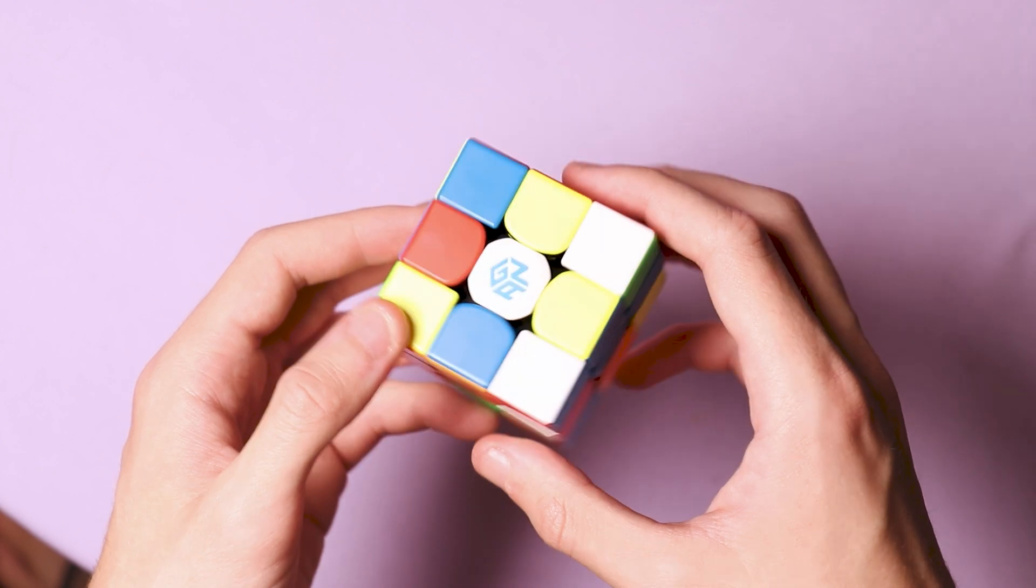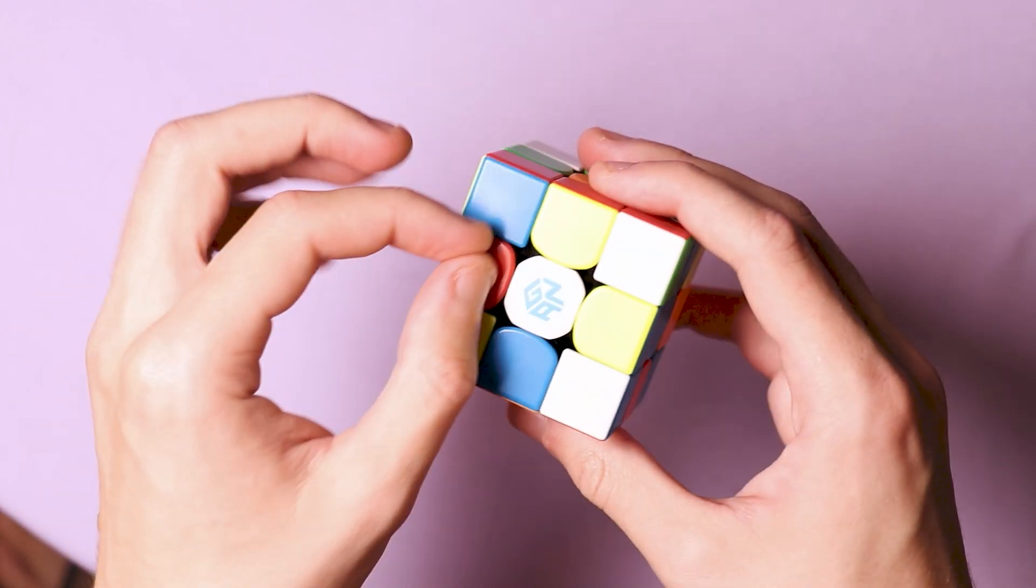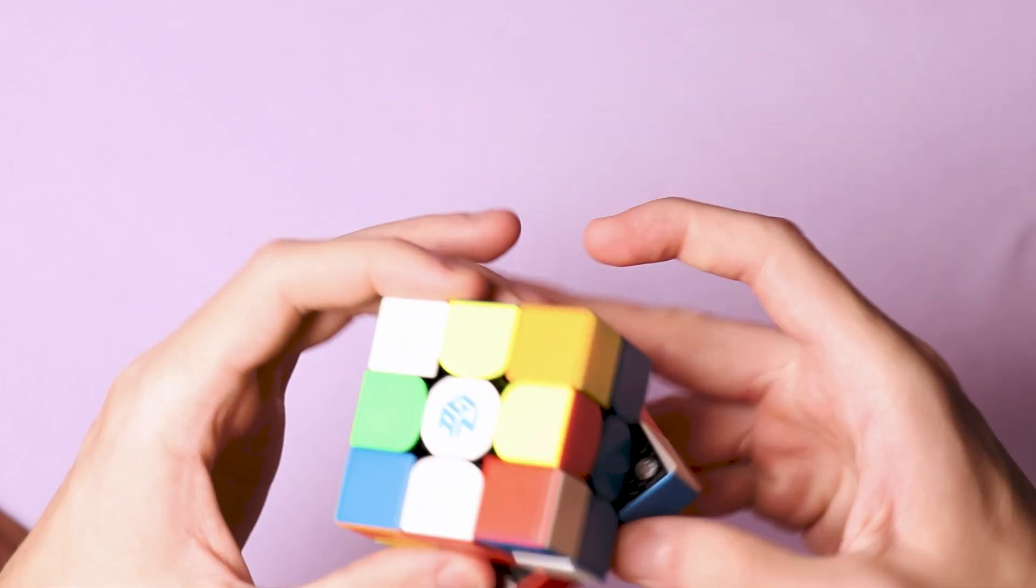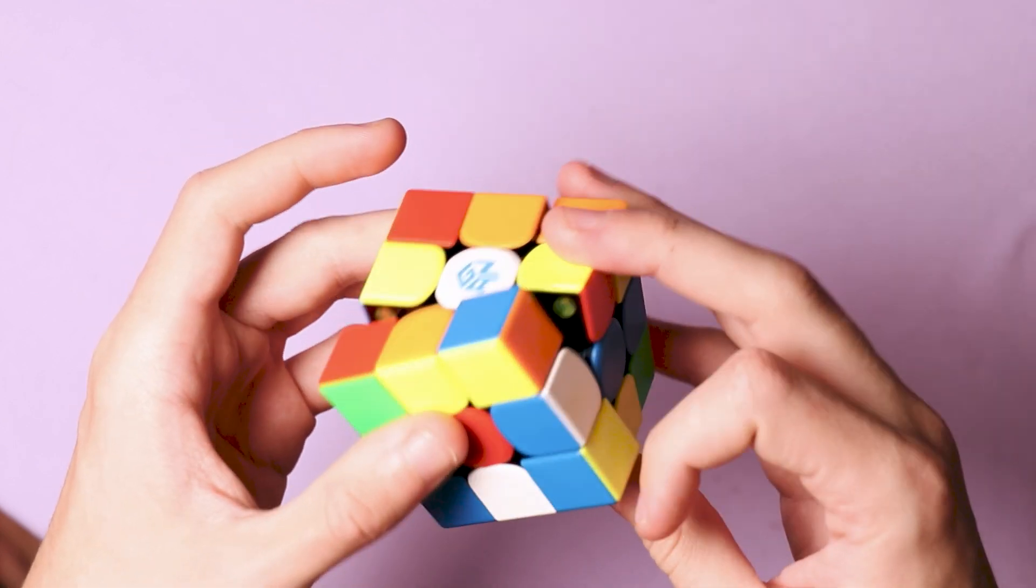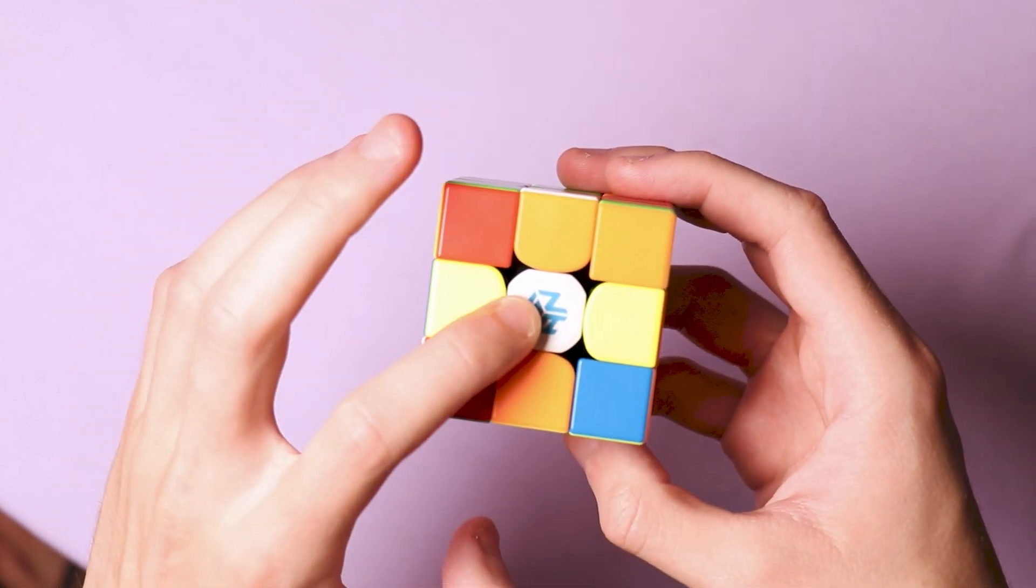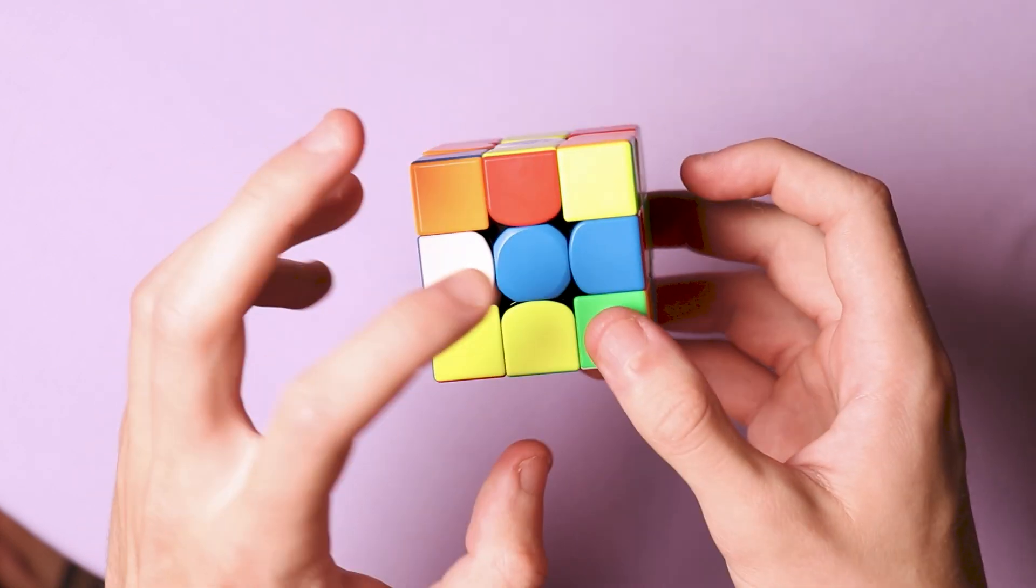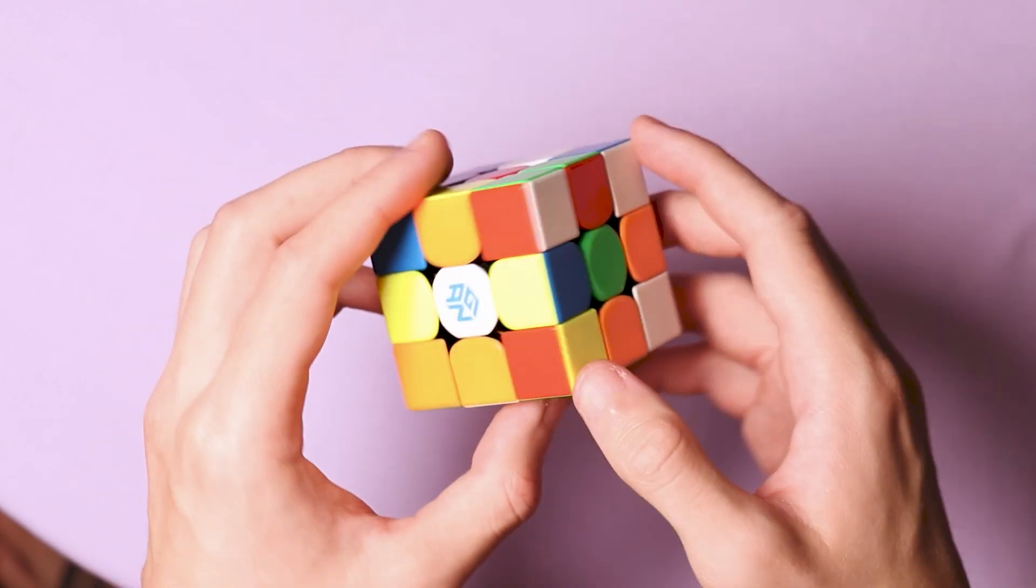Before we start the solution, we need to know how each piece behaves on the cube. First there are center pieces, and no matter what I do with the cube, the center pieces stay in the same place. The white center piece has the yellow in front, the red has the orange, and the blue has the green one in front always.